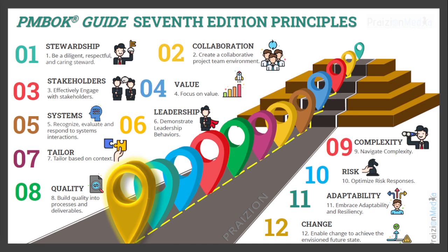Number six: demonstrate leadership behaviors. Number seven: tailor your processes and tools based on the project context. Number eight: quality — build quality into processes and deliverables. Number nine: navigate complexity; one way is breaking down the work into smaller pieces, delivering incrementally, and planning iteratively. Number ten: optimize risk responses. Number eleven: embrace adaptability and resiliency — being agile is a key to being resilient. Number twelve: change — enable change to achieve the envisioned future state. Every project is a vehicle to move an organization from a current state to a future state.